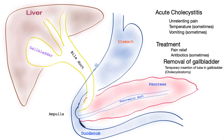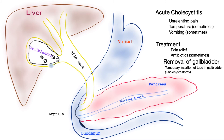Acute cholecystitis is a complication of the gallbladder where a stone blocks the exit. That's a gallbladder, these are the stones, and one of these stones has now blocked the exit. The difference between acute cholecystitis and biliary colic is that the stone does not move. This one stone has caused an obstruction and does not move for some time, causing the thickness of the gallbladder wall to increase until it becomes quite red and inflamed.